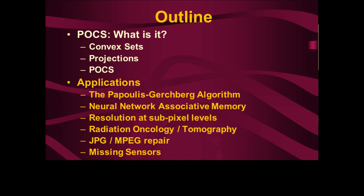We'll look at JPEG-MPEG repair. JPEG is a way of encoding images. What happens if you have blocks of pixels that are dropped from an image in transmission? Is there a way we can restore the lost pixels using the pixels that remain? We'll see that this is possible in certain instances when we use POCS.